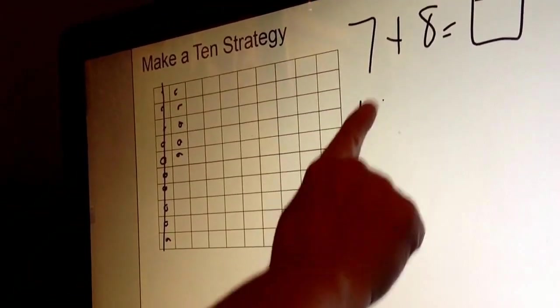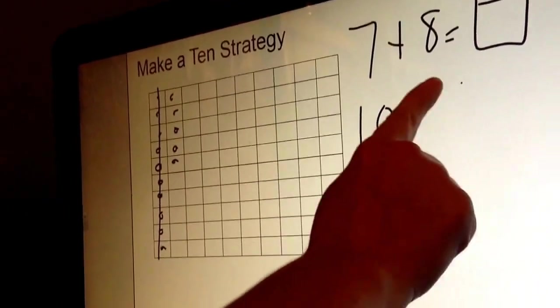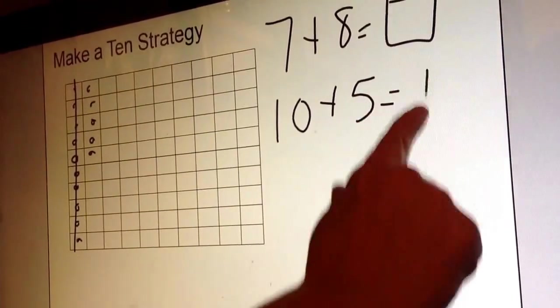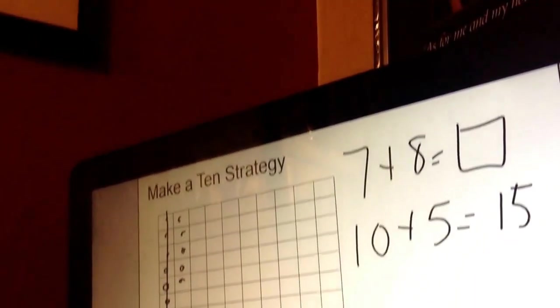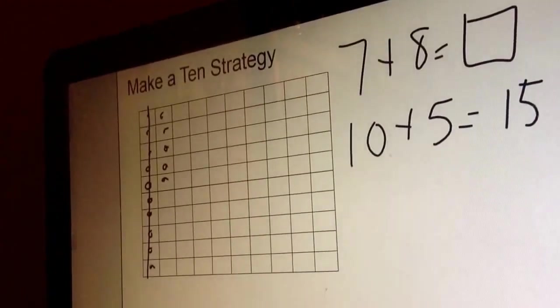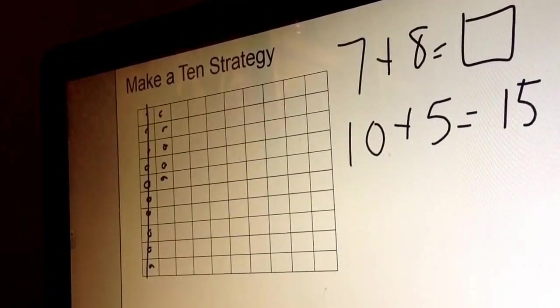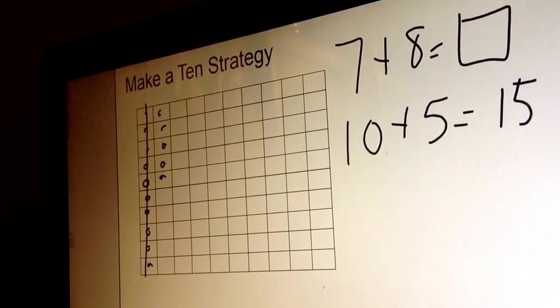So we have a new equation, and we call that 10 plus 5 equals 15. The students are taught that 7 plus 8 is the same exact thing as 10 plus 5, and then they're able to get 15.